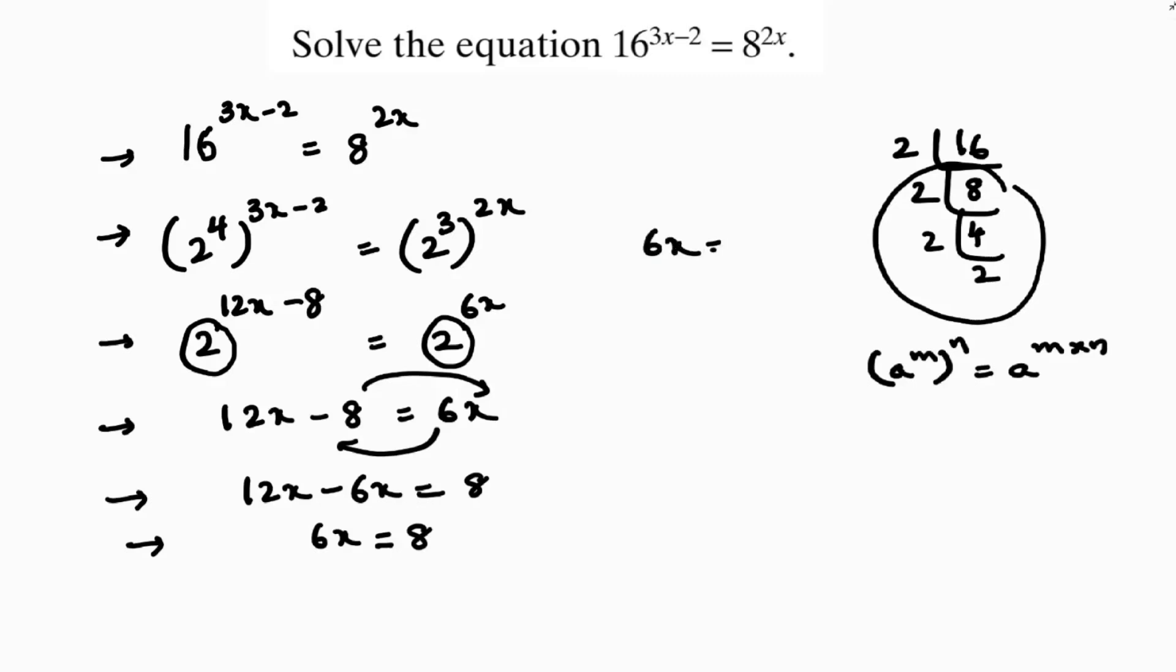So 6x equals 8. x equals 8 by 6. So if we cancel it 2 times, 2 times 3, 2 times 4. So the value of x is 4 by 3.